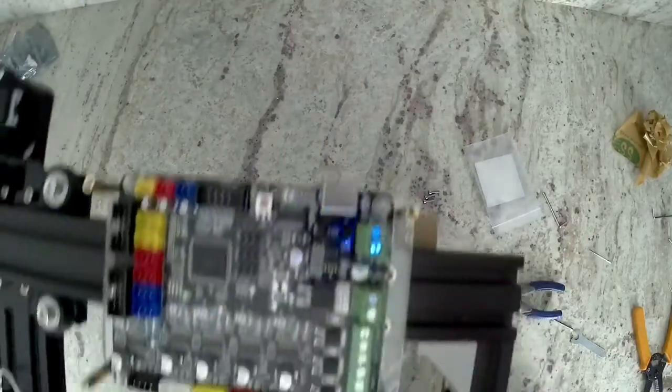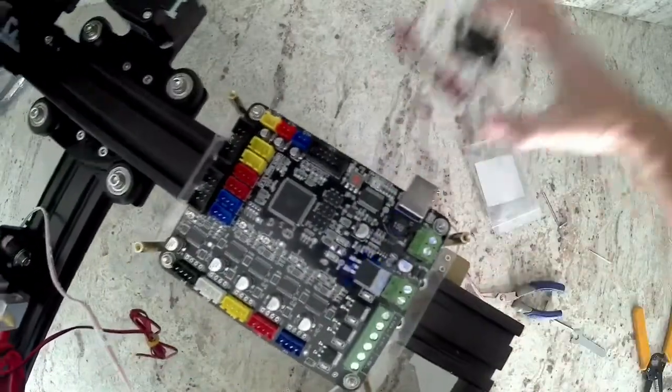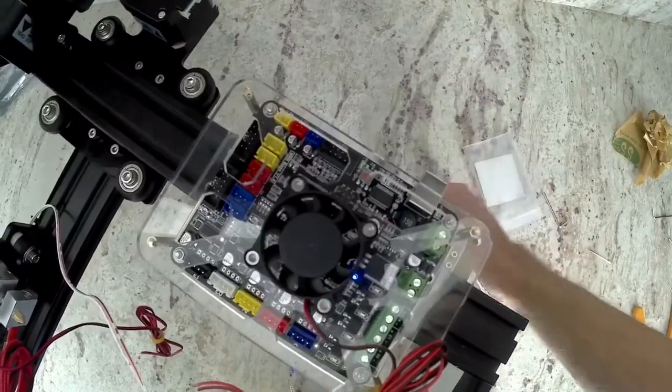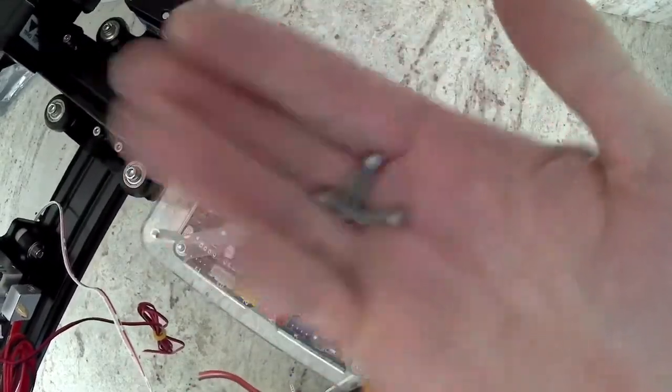This fan and acrylic panel will actually mount on top of your electronics, on top of those longer brass nuts, but we're going to do that at a later point. First, we're going to wire up our electronics.